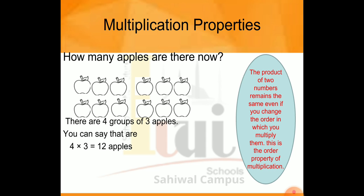The product of two numbers remains the same even if you change the order in which you multiply them. This is the Order Property of Multiplication. The first property we have is the order of multiplication — the answer does not change. Whether we do 3 multiplied by 4 or 4 multiplied by 3, the answer is the same: 12.